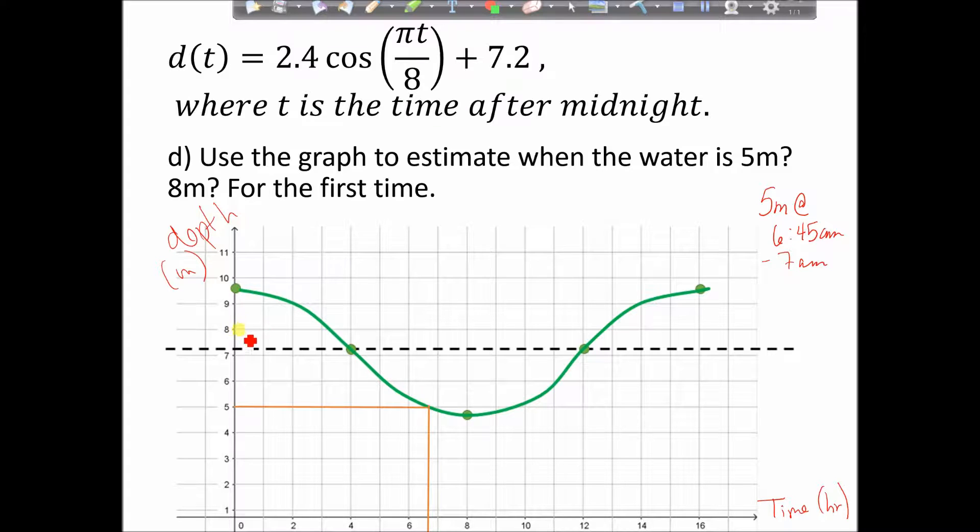Whereas 8 meters, that's going to be a little bit sooner. So I go across until I hit the graph from 8, and then I drop straight down, and this is 3 right here. It's just a little bit after 3:00. So 8 meters, maybe 3:15am, slightly after 3am. Again, we wouldn't be too fussed. We're pretty flexible because we are going from a graph. We can't be absolutely precise. But we can, however, use the CAS to help us solve these equations, and we can get an exact answer.